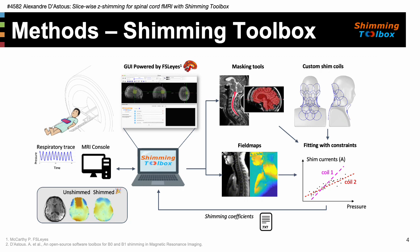Custom coils as well as scanner gradient and shim coils can be used to compute the shim coefficients, allowing shimming using scanner hardware as well as custom hardware. Using the existing tools and APIs, this allowed for easy integration of the intensity-based z-shimming technique within the shimming toolbox ecosystem.